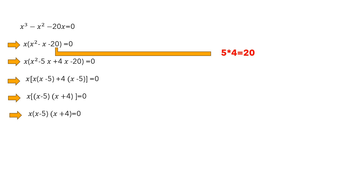Our math equation is x cubed minus x squared minus 20x equals zero. We can take x common from all parts, because x appears in every term. If we take x common, we get x times (x squared minus x minus 20) equals zero.